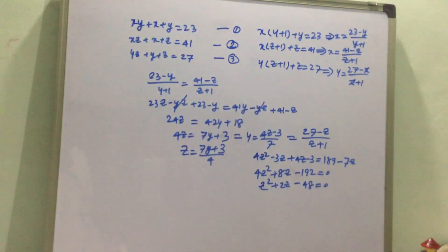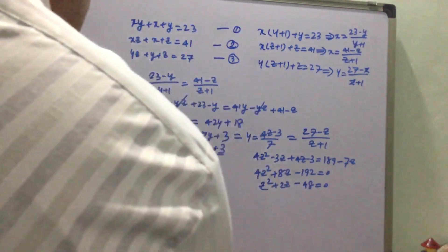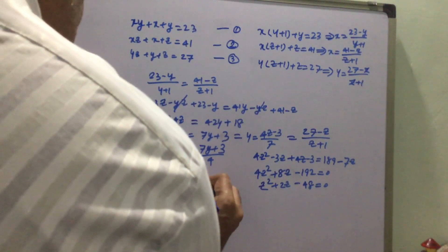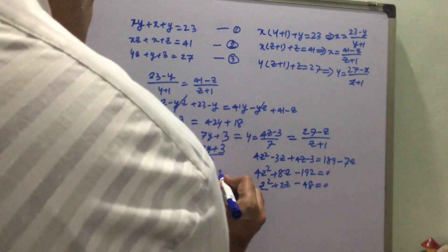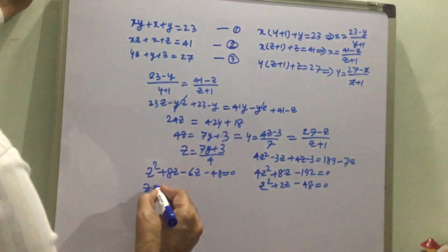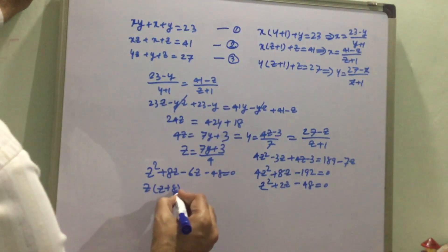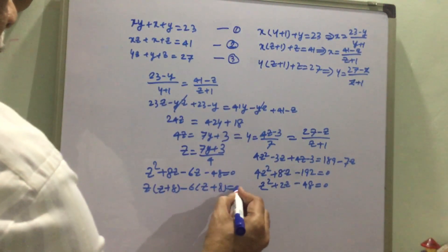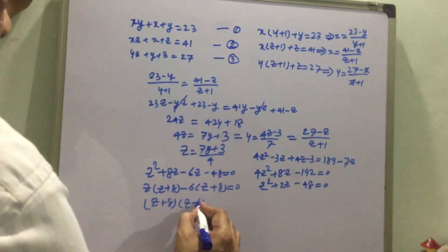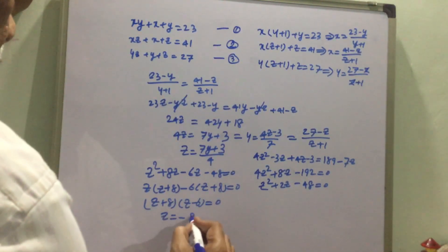To find the roots, we factorize 48 as 8 × 6, with a difference of 2. So we write z² + 8z - 6z - 48 = 0, giving z(z + 8) - 6(z + 8) = 0, hence (z + 8)(z - 6) = 0, giving z = -8 or z = 6.